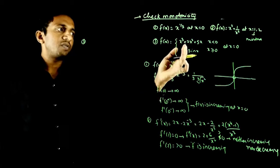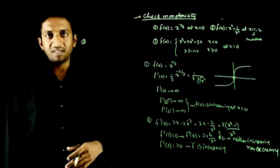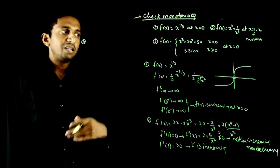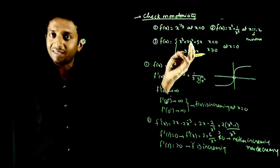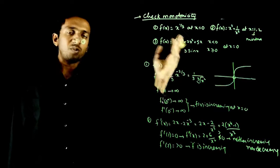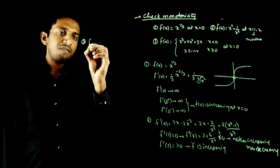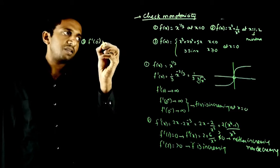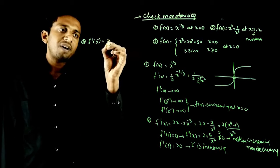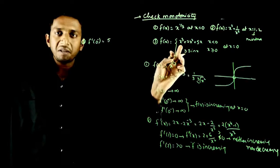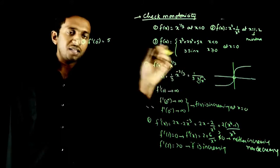The third function is: f(x) = x³ + 2x² + 5x for x < 0, and 3 sin x for x ≥ 0. We need to check at x = 0. First, check continuity — the function is continuous at x = 0. Then, f'(0⁻): differentiate x³ + 2x² + 5x and put x = 0. You get 5, which is positive.